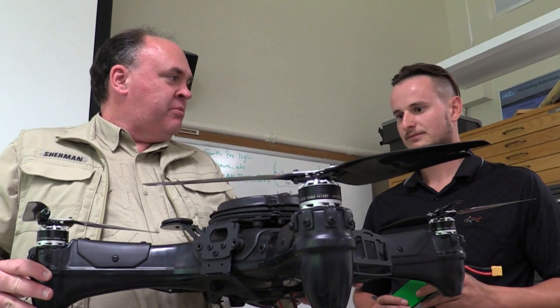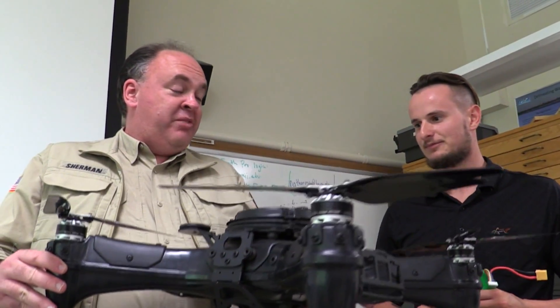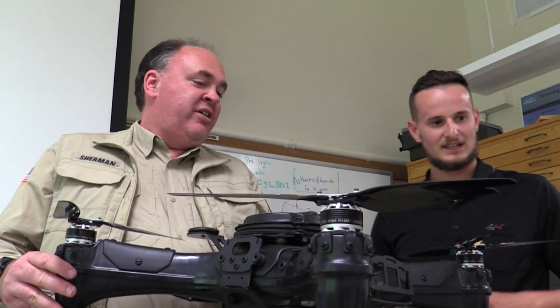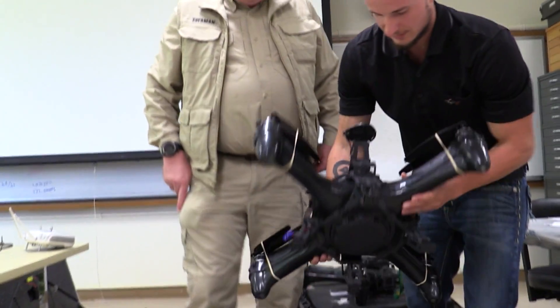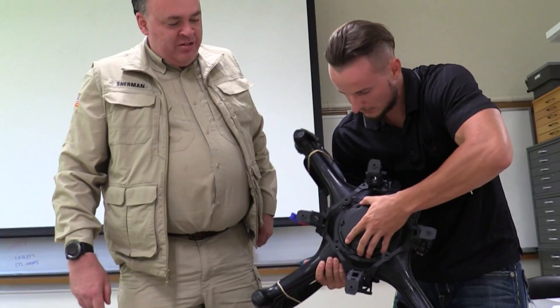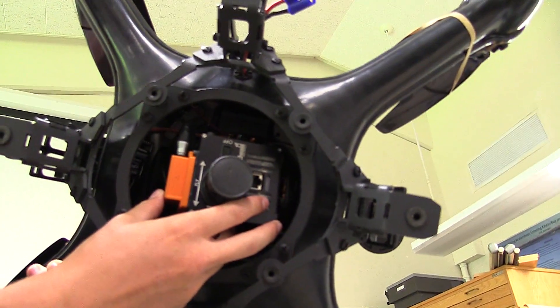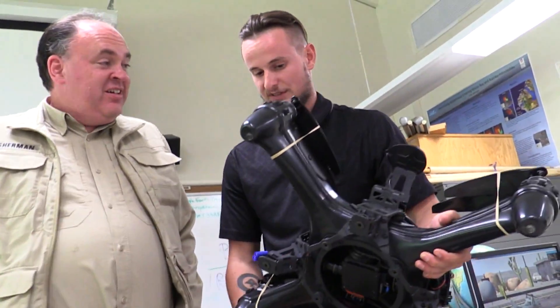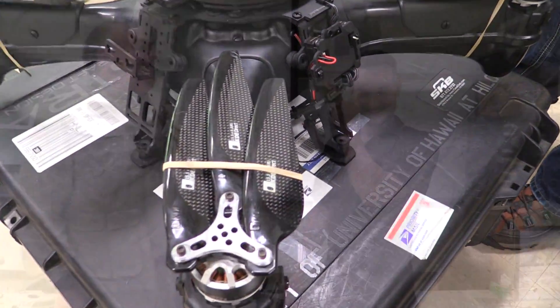And over here is the twin brother IVAN — a hyperspectral IVAN. This carries the Headwall nano-spectral radiometer. We just received it last week; the rubber bands are still on the propellers. Its maiden voyage will be next week.